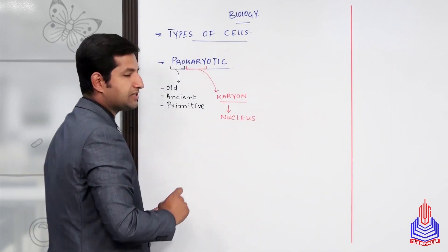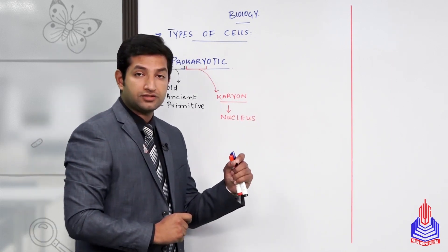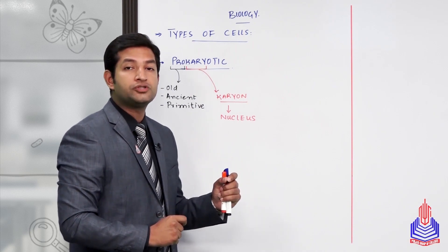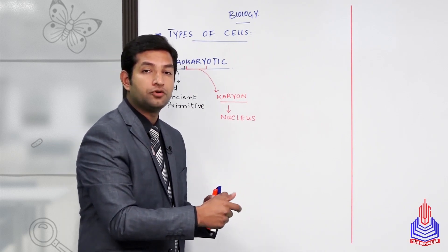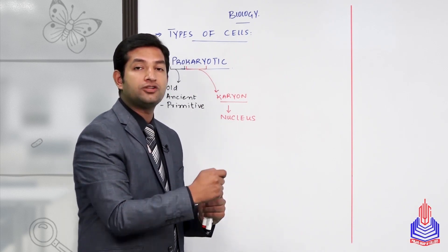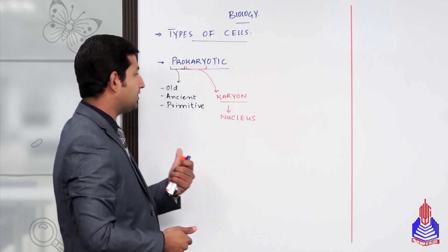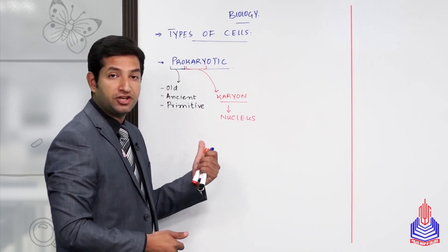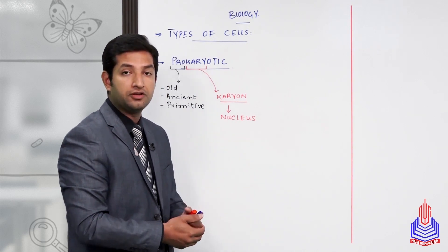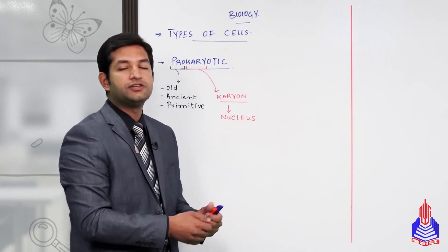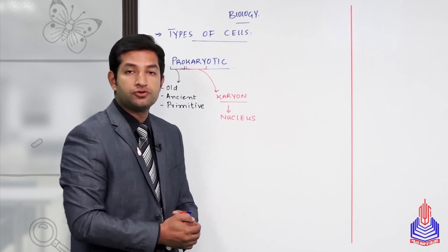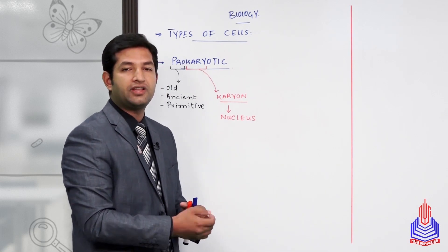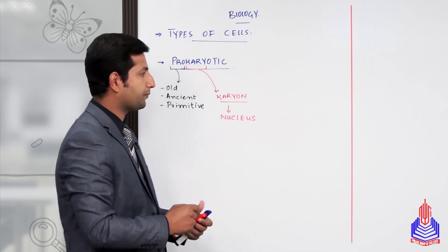The meaning is clear: those cells which do not possess an advanced, definite, or true nucleus contain a primitive or ancient type of nucleus. This old type of nucleus has no nuclear envelope present and is called a primitive nucleus.